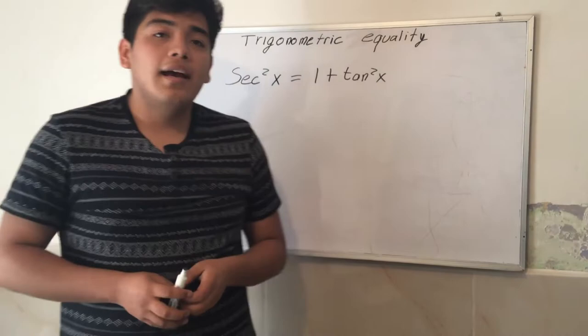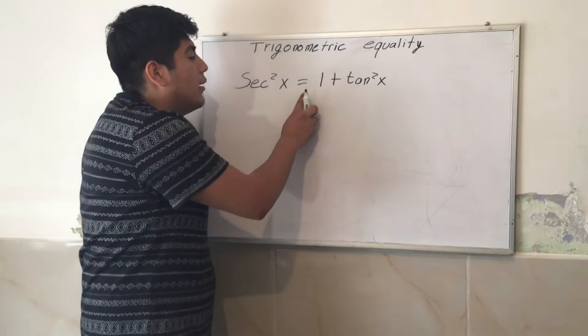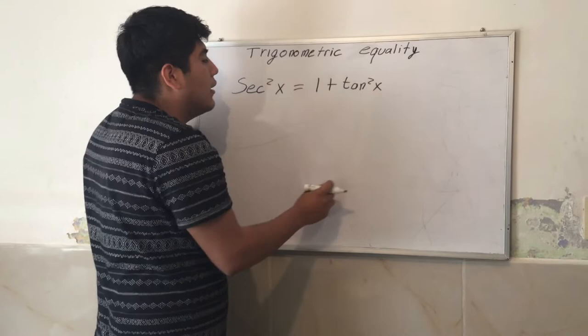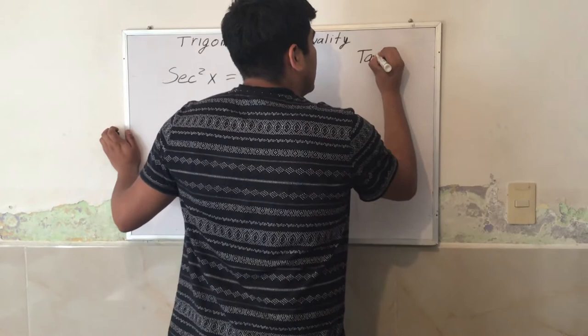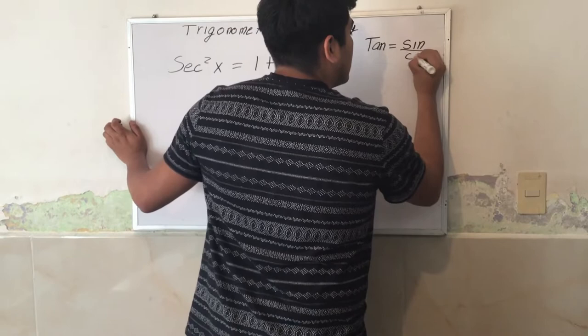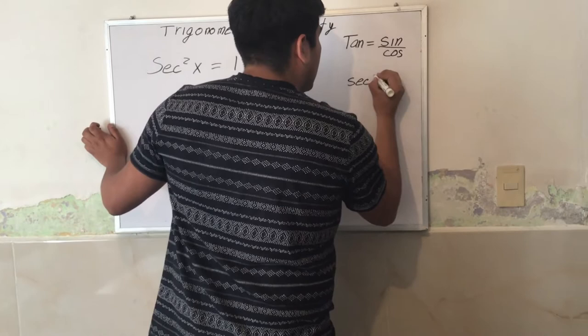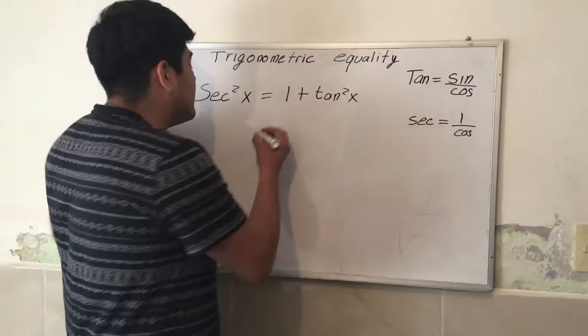Now let's see a trigonometric equality. Secant squared of X equals 1 plus tangent of X, equals 2 sine of X. And as we see, tangent equals sine over cosine.